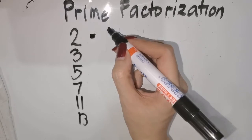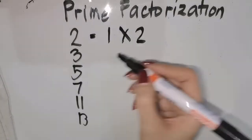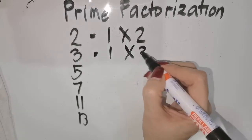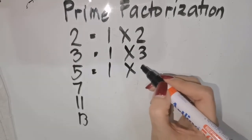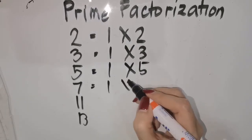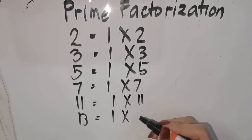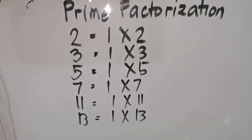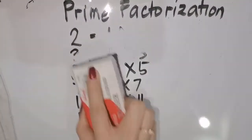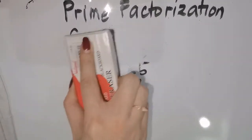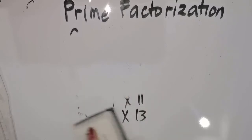For 2, we have 1 times 2. For 3, we have 1 times 3. For 5, we have 1 times 5. For 7, 1 times 7. For 11, 1 times 11. And 1 times 13. That's why they are called prime numbers — those are the only factors they have. So going back, we are going to factor out numbers using a set of prime numbers, meaning one of the factors must be a prime number.